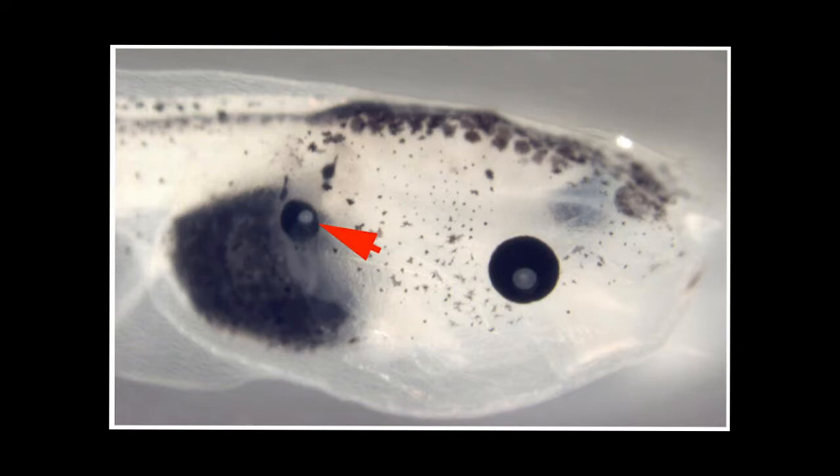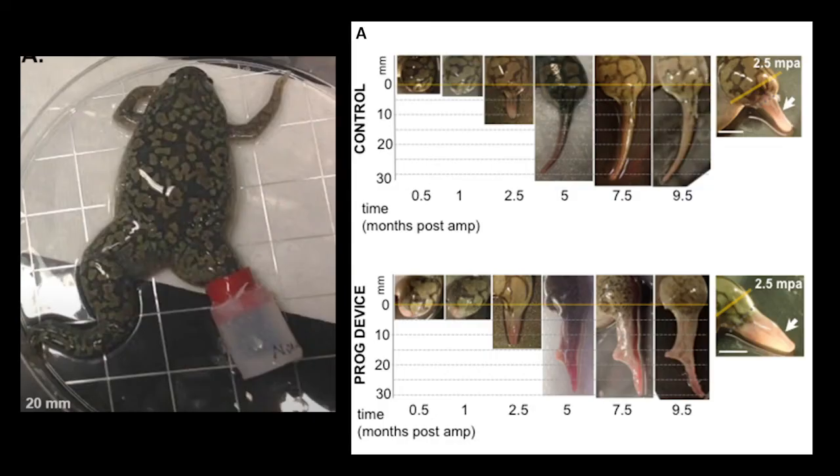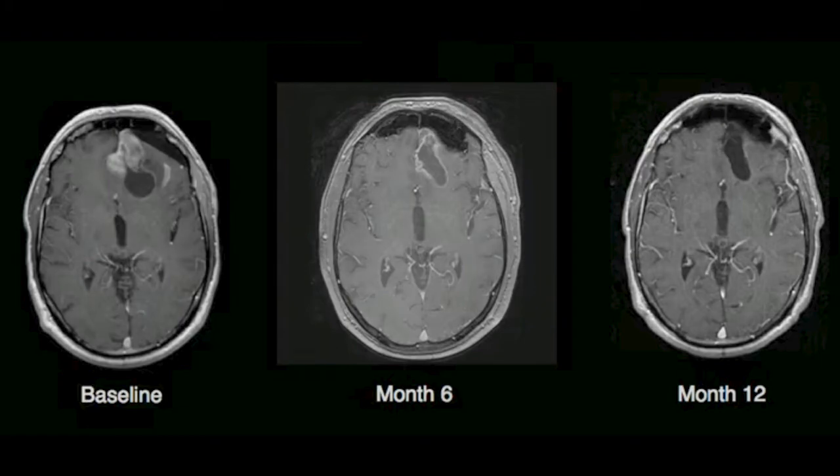Bit by bit, scientists are understanding this code of life and growing functional eyes on frog torsos, regenerating frog limbs with a transient cuff, and even removing cancer from humans.